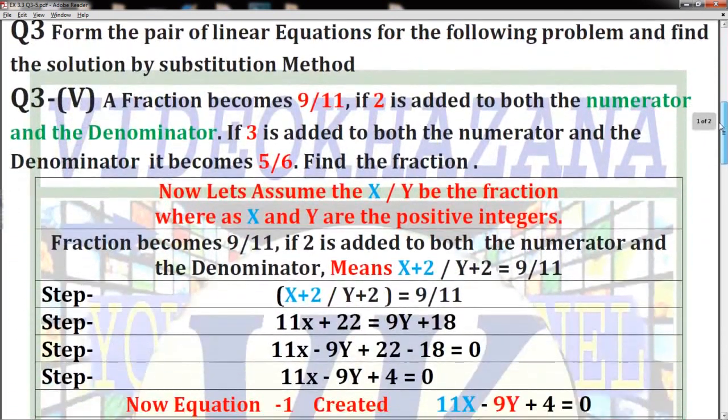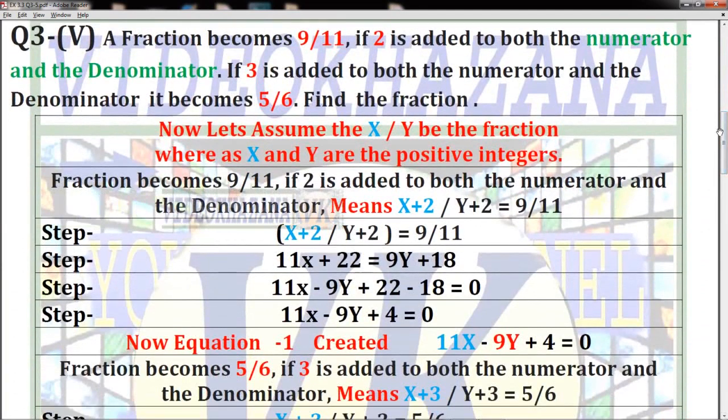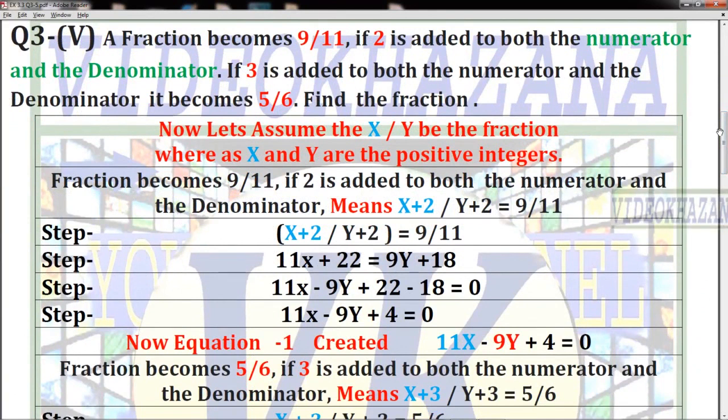Question 3.5: A fraction becomes 9/11 if 2 is added to both the numerator and the denominator. If 3 is added to both the numerator and the denominator, it becomes 5/6. Find the fraction.